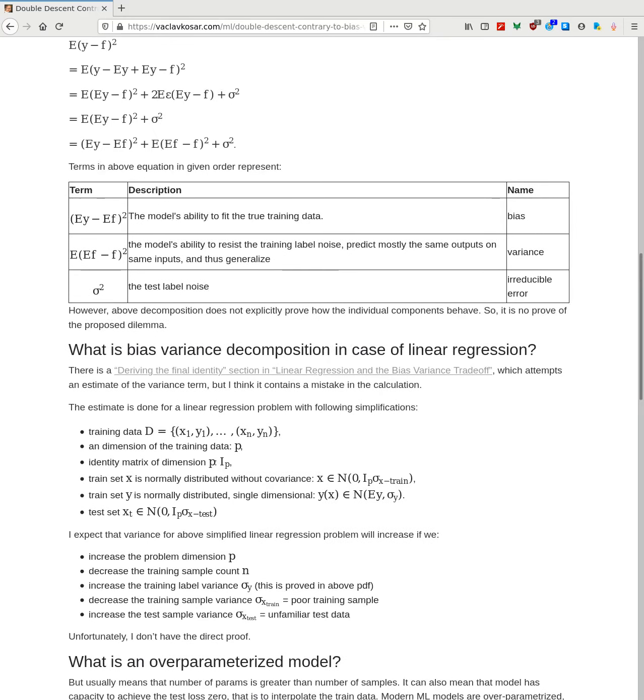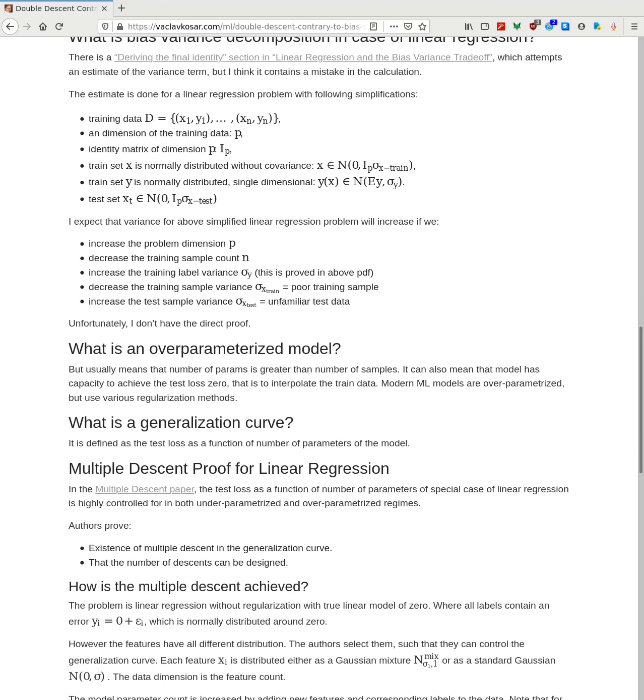It would be great to know this about the linear regression. There is this interesting paper, but I think they were not able to prove anything in specific in general. I think the variance term, from what I saw in the proof, which I think is incorrect, but from what I saw, I think it's very intuitive that we would expect the higher variance with the higher problem dimension. Also, we would expect decrease in the variance with higher training sample count. We would expect increase in the variance when, if we increase the training label variance and decrease in the variance if we decrease the training sample variance.